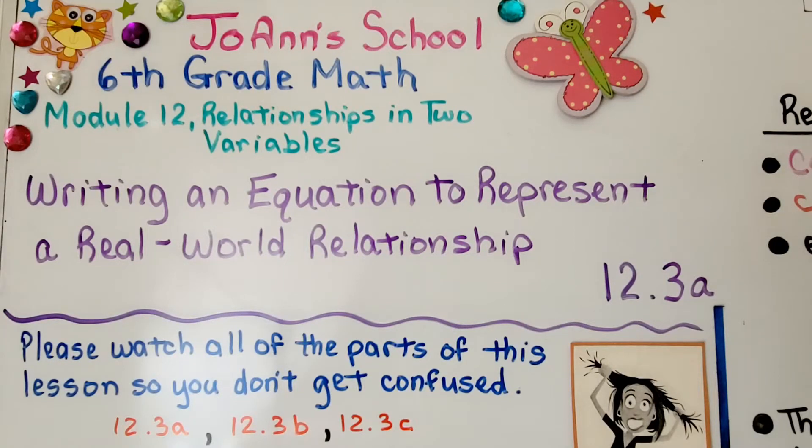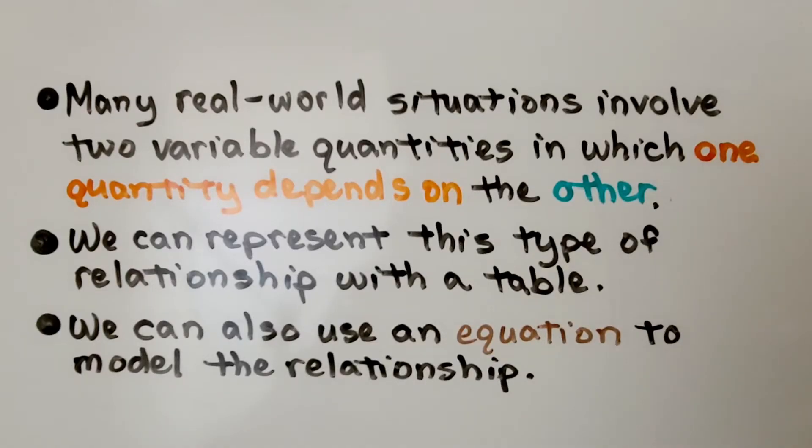Lesson 12.3a, Writing an Equation to Represent a Real-World Relationship. Many real-world situations involve two variable quantities in which one quantity depends on the other. We can represent this type of relationship with a table. We can also use an equation to model the relationship.